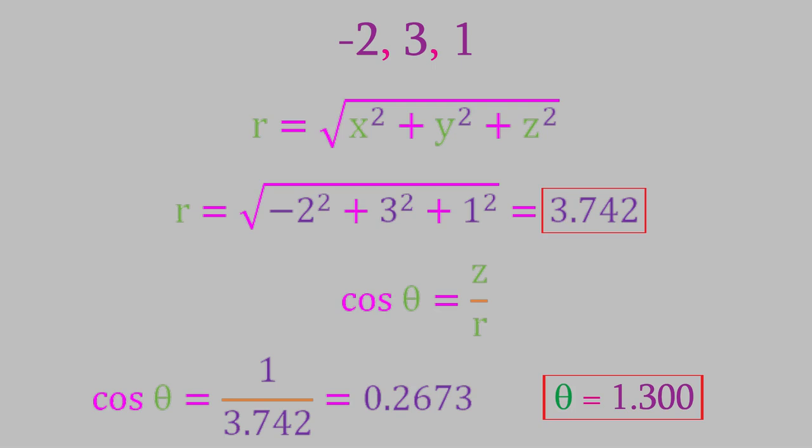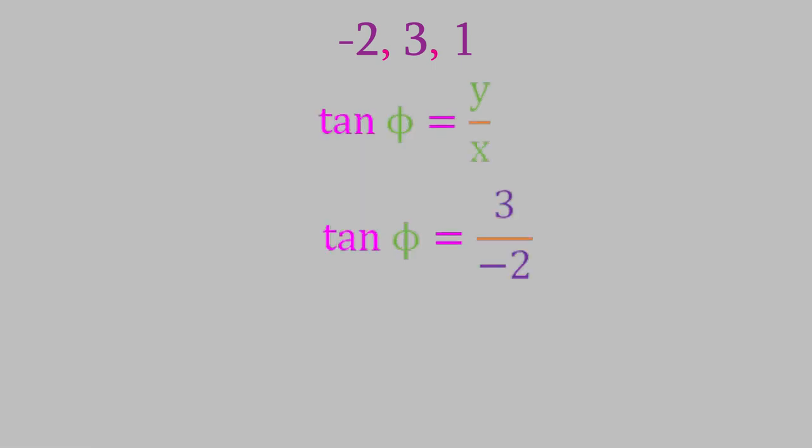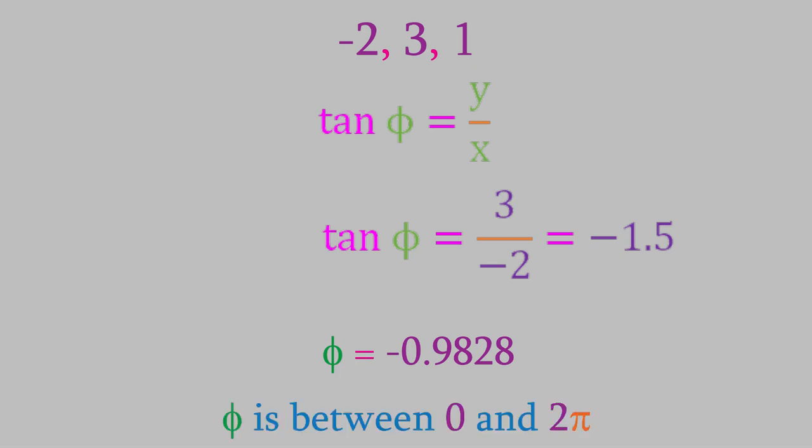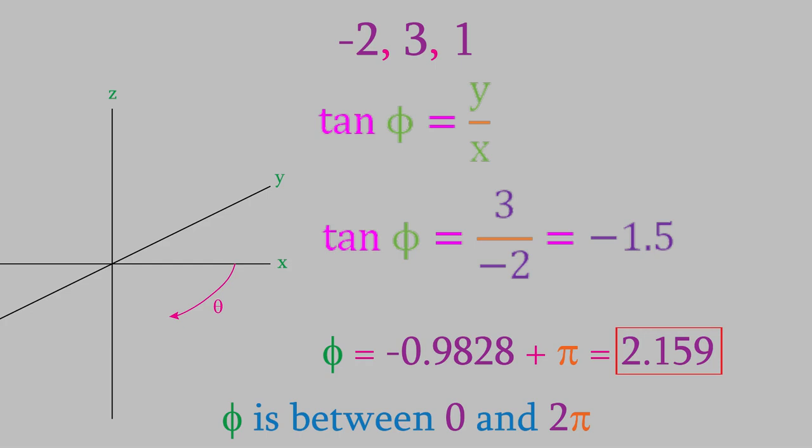Finally, when we use the equation for phi, we find out that the tangent of phi is negative 1.5. That gives us phi is equal to negative 0.9828. But wait! Remember, we said we need phi to have a value between 0 and 2 pi. In this case, we got a negative number, and that means that our calculator calculated the value of phi we'd get if we had gone clockwise from the positive x axis, instead of counterclockwise. The value of the tangent repeats every pi radians, so to correct our negative number, we just need to add pi to our value, which gives us 2.159.